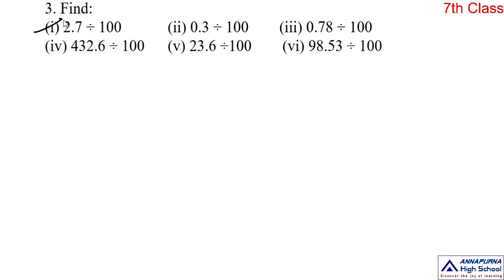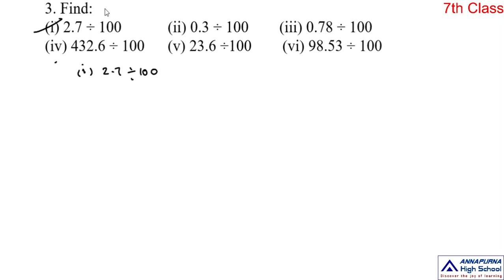The third one is: find 2.7 divided by 100. As you know that when any decimal number is divided by 100, already we did some problems on division by 10. Now, division by 100 — what is the rule we have?